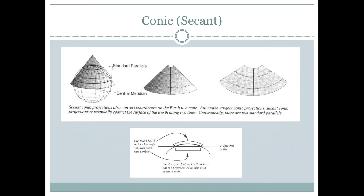However, we can do even better. We can use a secant map projection where the cone cuts through the Earth, giving two lines where the cone exactly follows the outline of the globe and has zero distortion. So now we have two standard parallels with no distortion. The area in between is squished down onto the cone, and the area outside the two standard parallels is stretched out to be projected onto the cone. This secant conic map projection minimizes distortion along two east-west lines and is well suited for mid-latitude regions like the United States, Europe, Russia, and other east-west oriented areas.